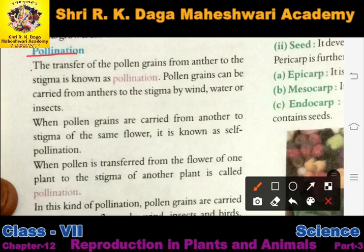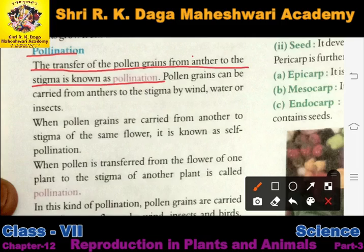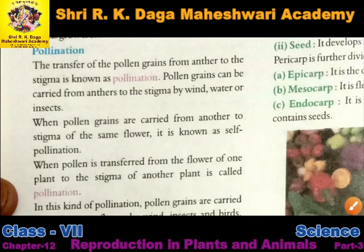From today we are going to start our next topic — that is pollination. What do we mean by the term pollination? The transfer of pollen grains from the anther to the stigma is known as pollination. Pollen grains ka transfer anther se stigma mein jab hota hai toh is transfer ko hum bolte hain pollination.